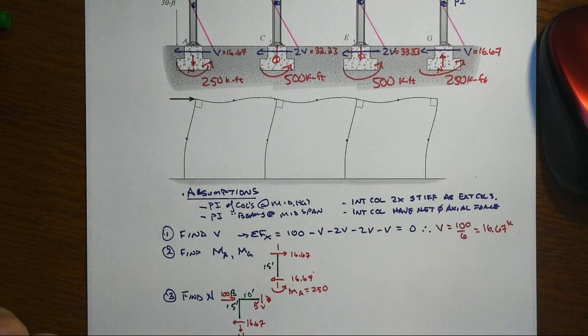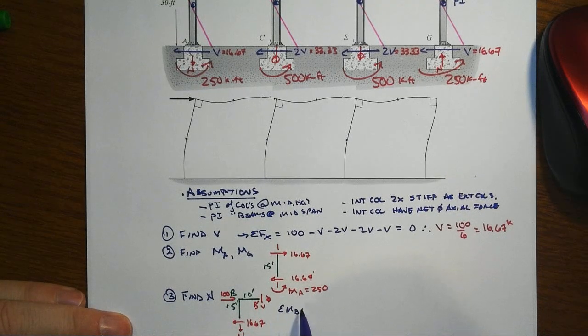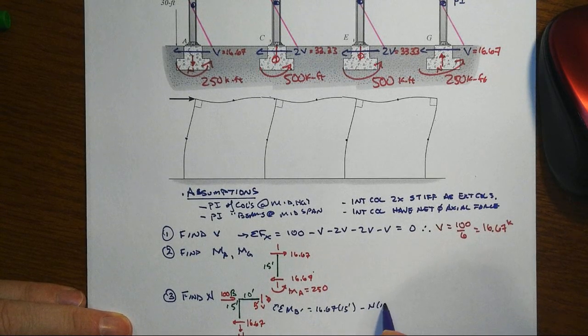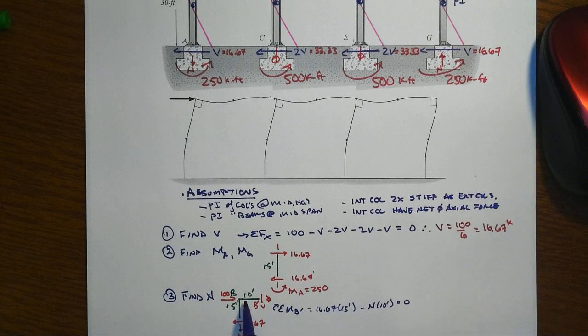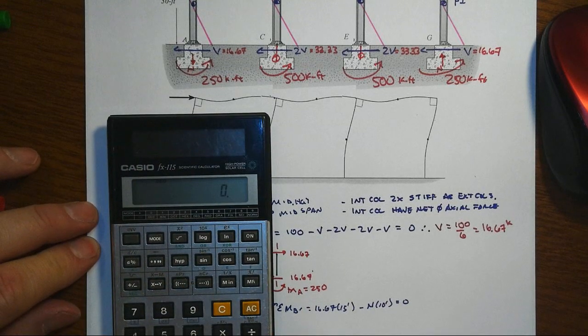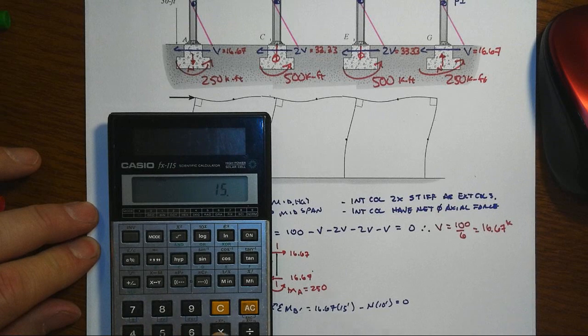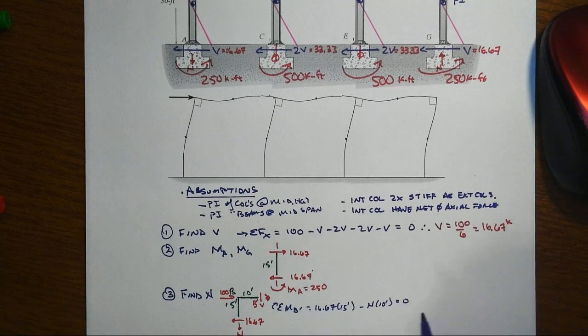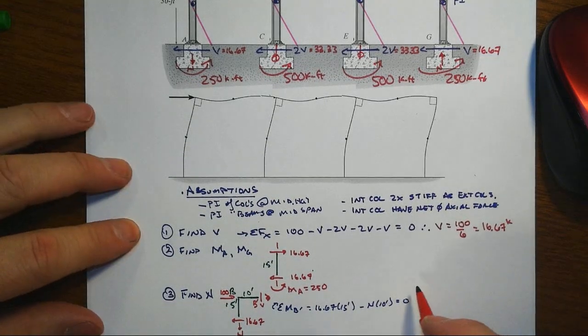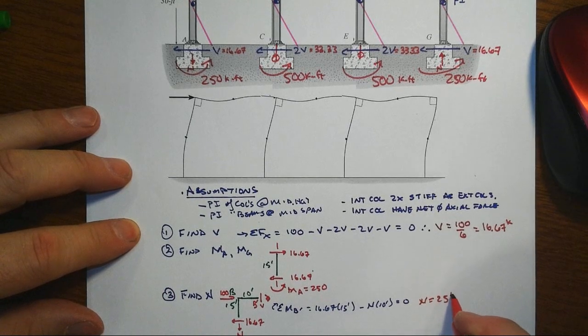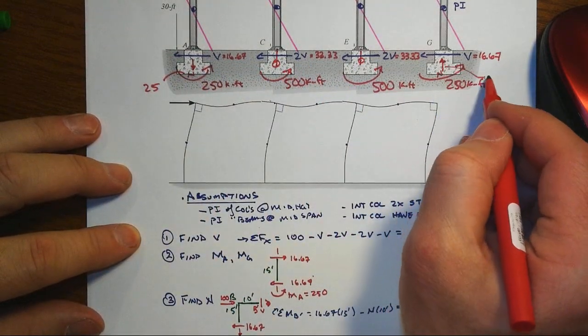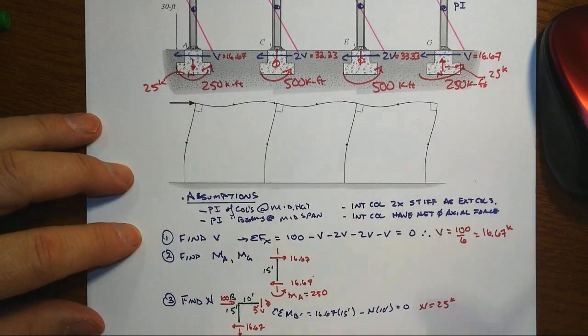And if we sum moments about B prime, then we'd have 16.67 times 15 feet minus our N times 10 foot. Notice this was convenient because that way we don't have to deal with the 100-kip load at all. Its effect has already been taken care of. And so N will just be, then, 16.67 times the 15 divided by 10, or 25. There's a little rounding error in there. If we carried out more digits, we'd find out that that's exactly 25. So that gets all the reactions in there.